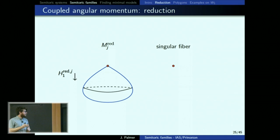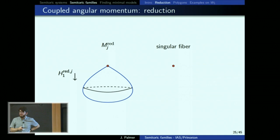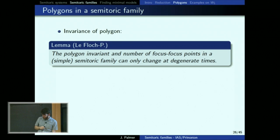[Question: Is this an orbifold?] Yes, the fixed points of the S^1 action give you orbifold points in the reduced space — though it's not quite an orbifold since the isotropy isn't finite. So it's some sort of singular space.